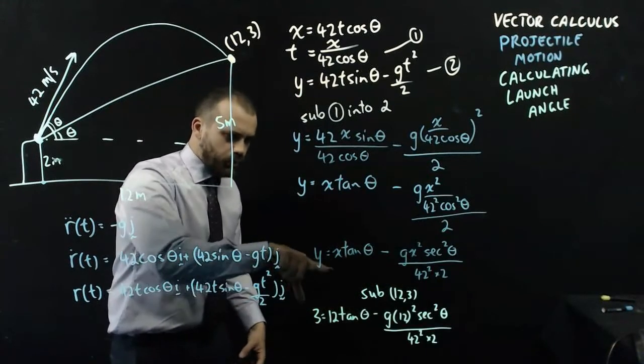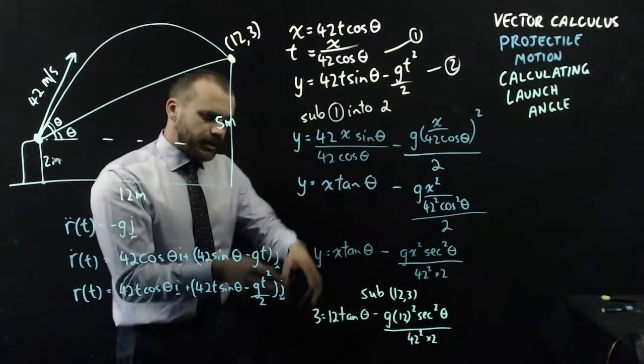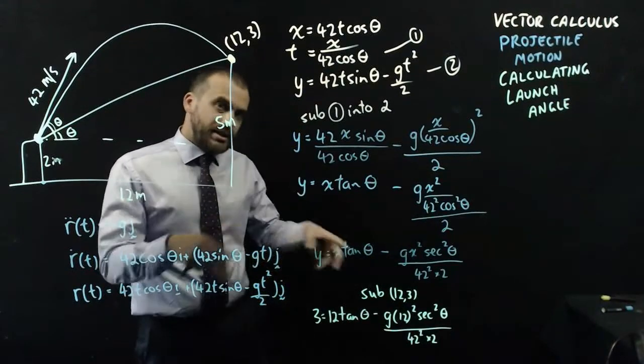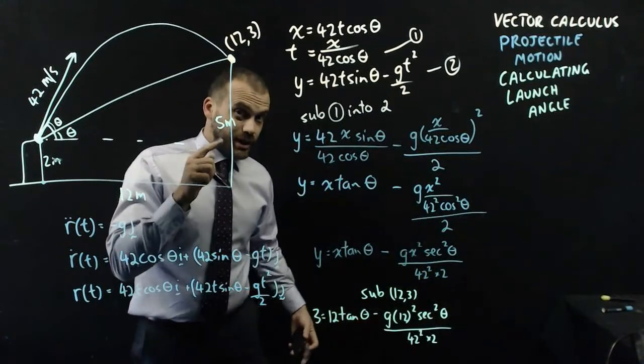You can see y is 3, 12. Put another 12 in there, 12 squared. Now, if I type that into my calculator, I can do it two ways. I can do an n solve. Just type n solve. Type all of that in and I'll get an answer.